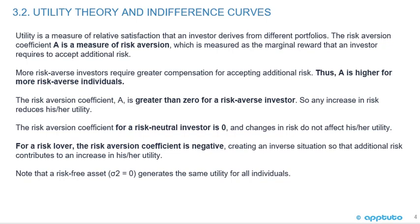The Risk Aversion Coefficient A is greater than zero for a risk-averse investor, so any increase in risk reduces his or her utility. For a risk-neutral investor, A equals zero, and changes in risk do not affect utility. For a risk lover, A is negative, creating an inverse situation so that additional risk contributes to an increase in utility.